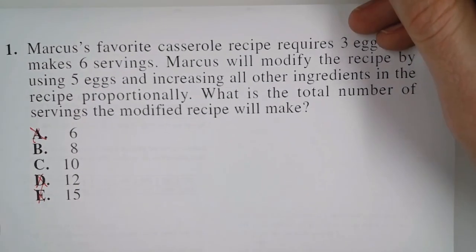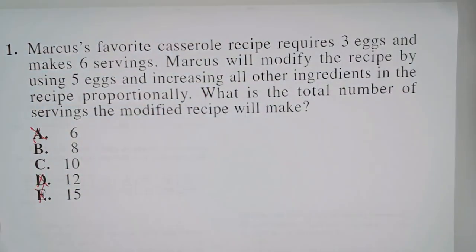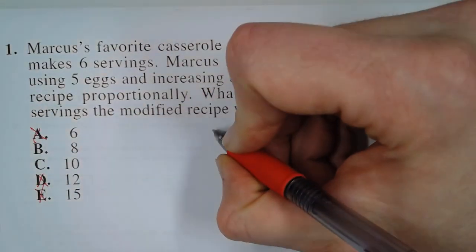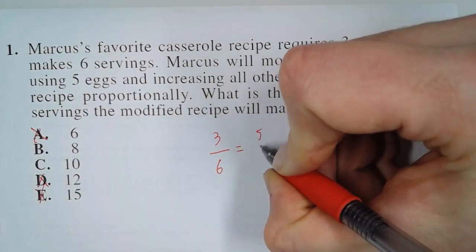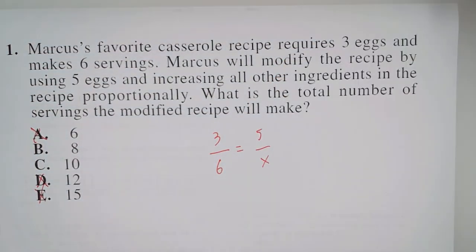Now, when we talk about proportionally, we can set up a ratio. And so we say three eggs to six servings equals five eggs to X servings.